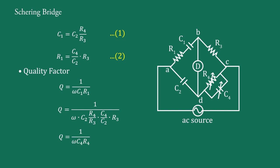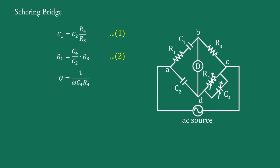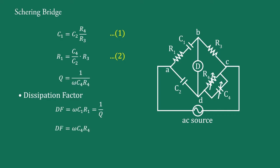Since Q is inversely proportional to C4, a high quality factor requires a small capacitor C4. Hence this bridge is suitable for high quality factor measurements. The fourth parameter is the dissipation factor DF, defined as DF = ωC1·R1, which is also equal to 1/Q. Using the quality factor equation, DF = ωC4·R4. In the next video, we will discuss the modified Resonance Bridge. Thank you.